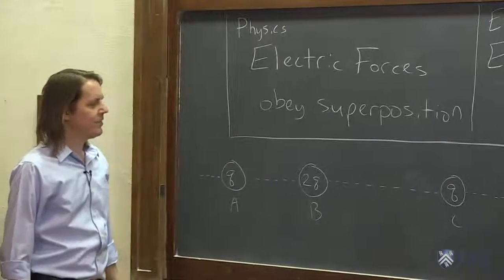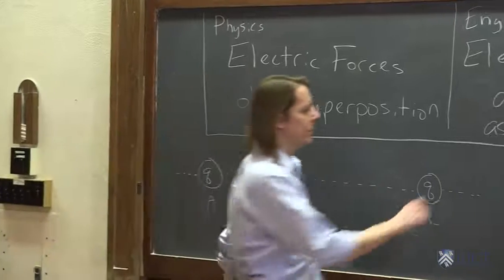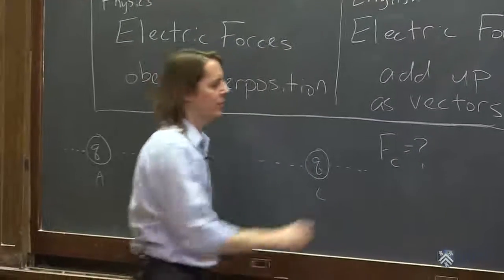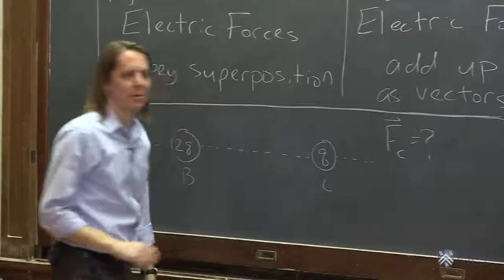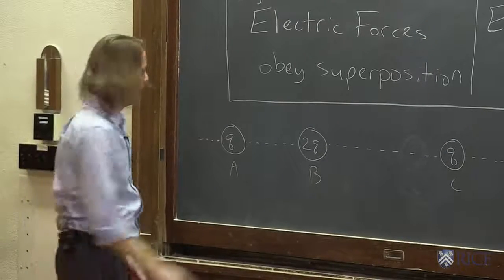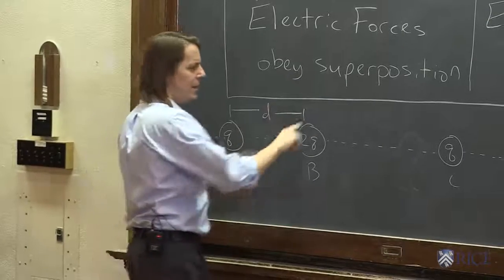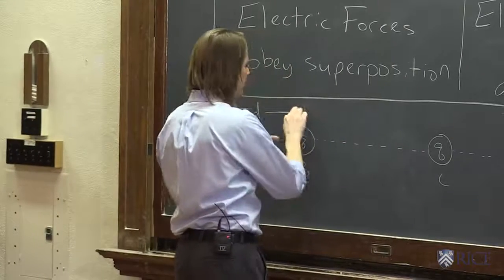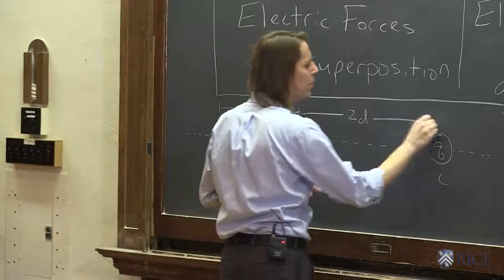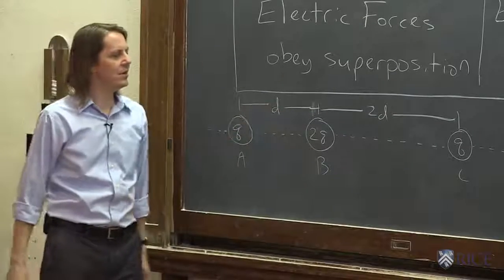So we can ask simply, what is the force on C? We'll do it as a vector, because we've got to start thinking about the vectors now. But we would also need to know the separations to figure this out. So I'm going to say these are separated by D, and these are 2D, so A to B is D, B to C is 2D.